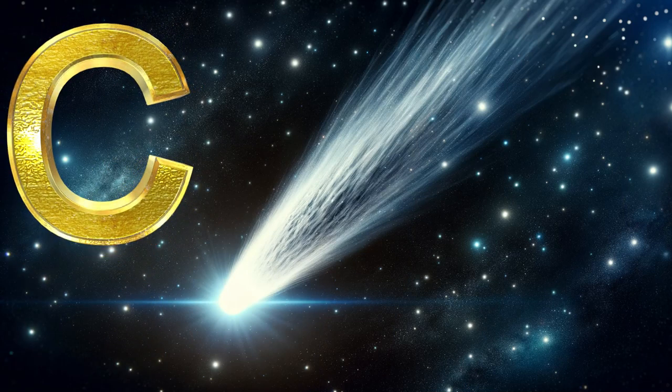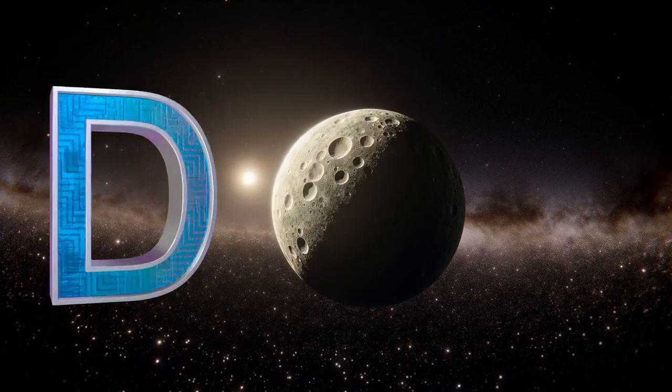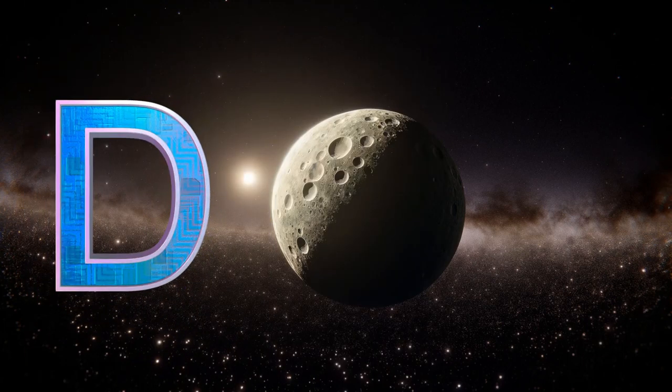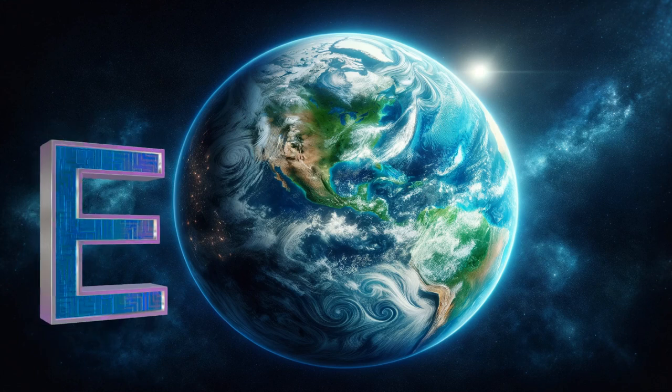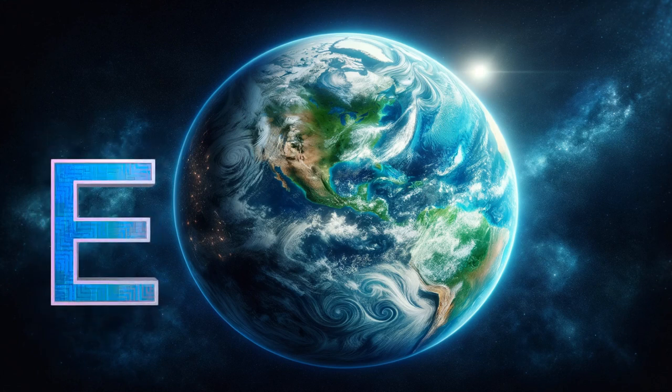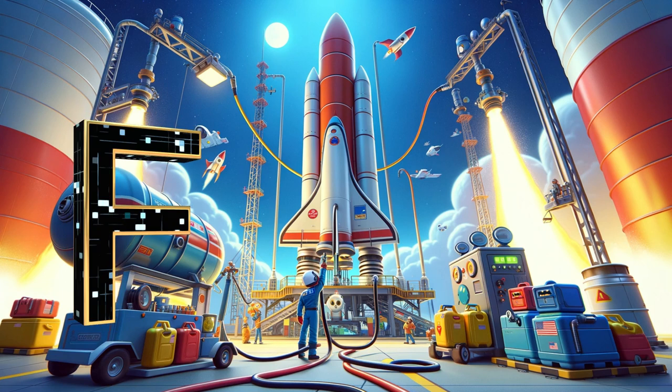with its tail so bright. D is for dwarf planet, in the night sky's light. E is for Earth, our home so dear. F is for fuel, to get us out of here.